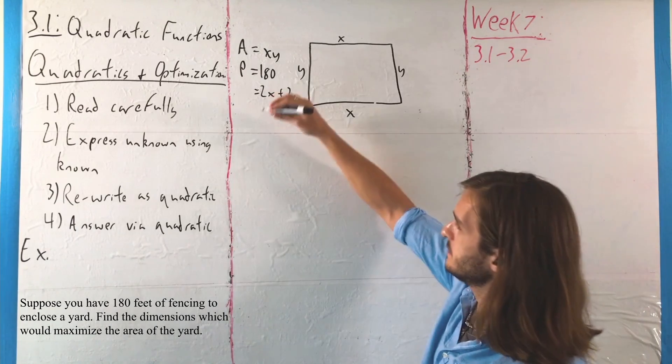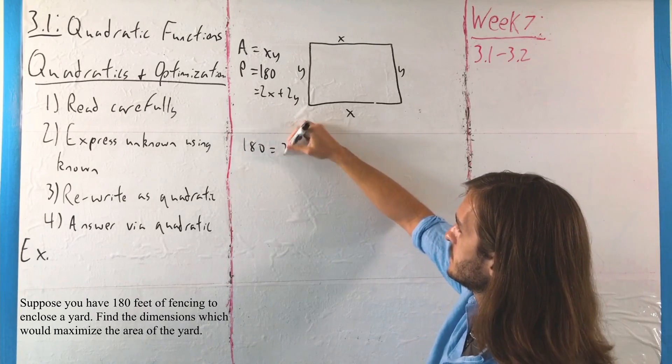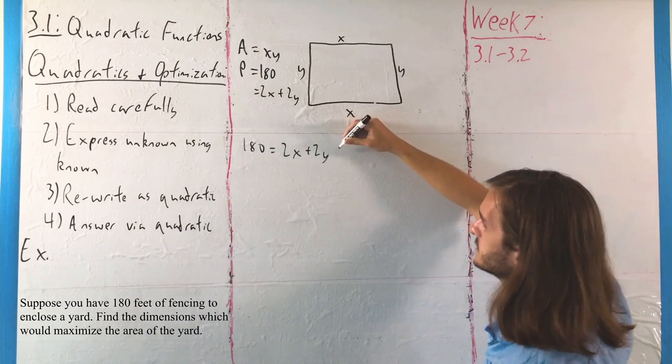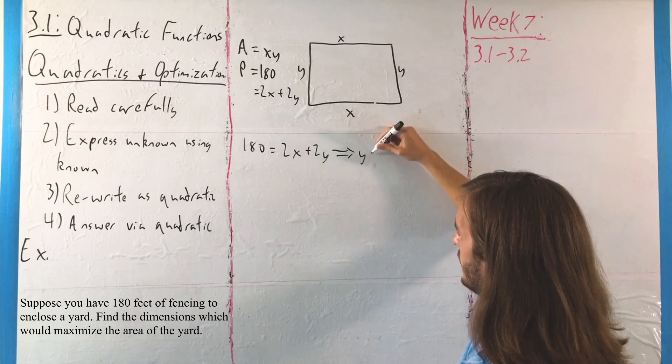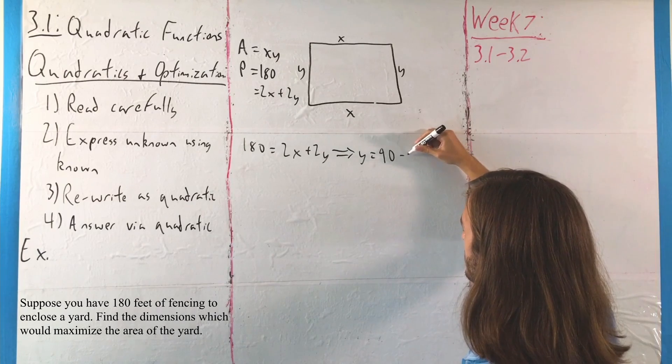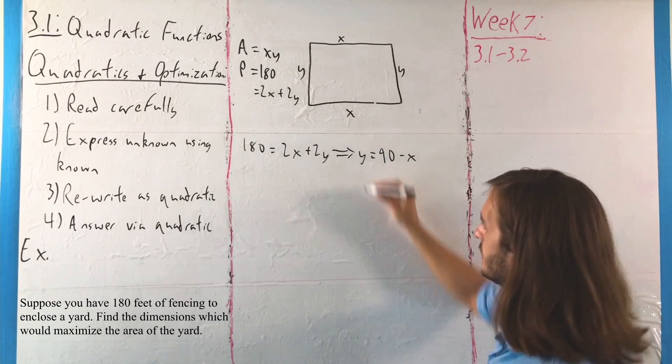In this case, if I solve for y, I have 180 is equal to 2x plus 2y. I'm going to subtract over the x, divide out the 2, and we will get that y is going to be equal to 90 minus x.